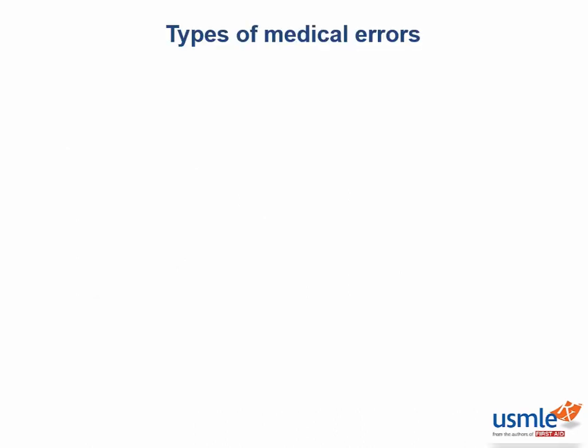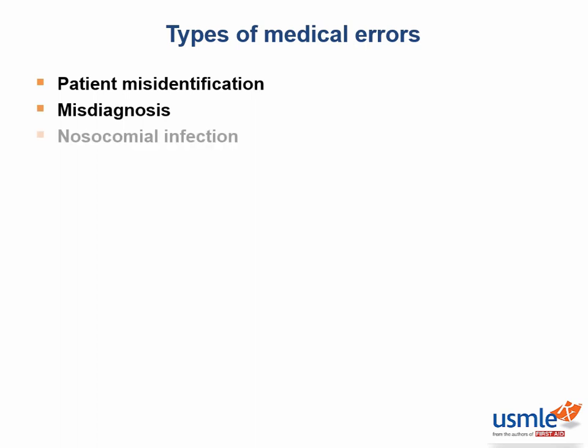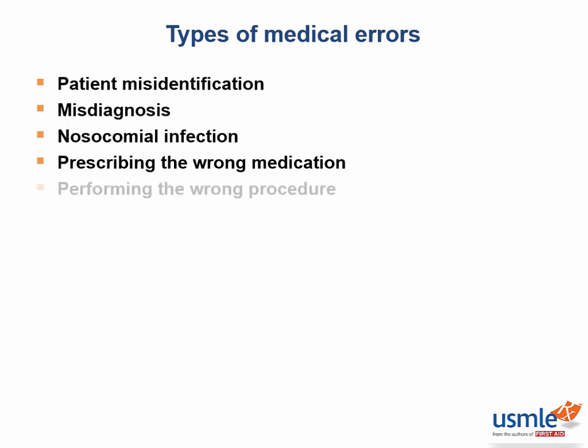Now let's talk specifically about the types of mistakes that physicians can make. What are some that you can think of? Some things you might have thought of include things like patient misidentification, misdiagnosis, nosocomial infection, prescribing the wrong medication, or performing the wrong procedure.